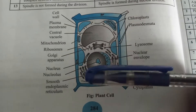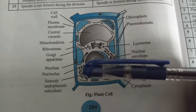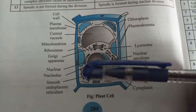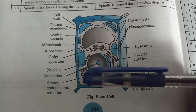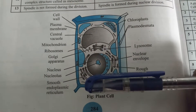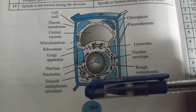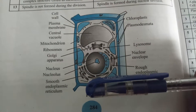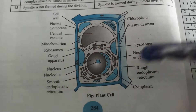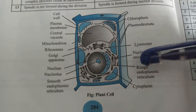The nucleus, which we also call the brain of the cell, contains chromatin material, nucleolus, and nucleoplasm. Next, the smooth endoplasmic reticulum, which is devoid of ribosomes, is concerned with lipid synthesis.